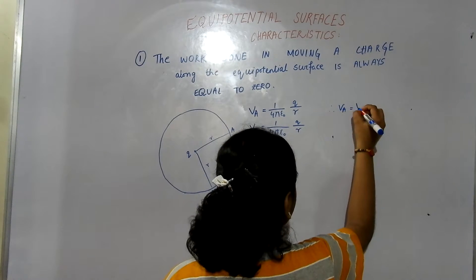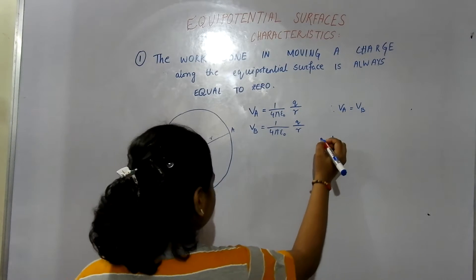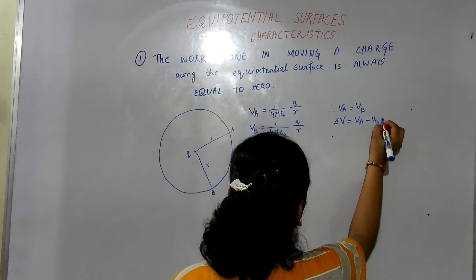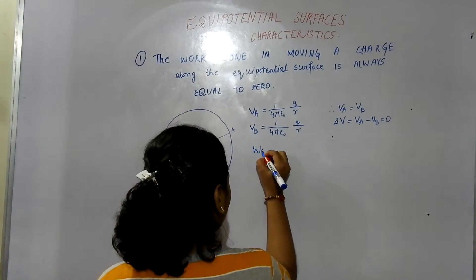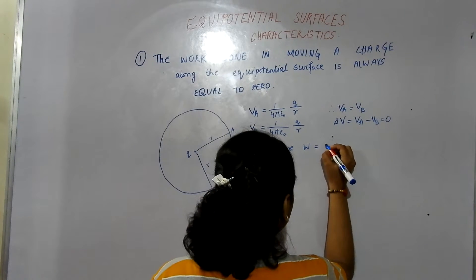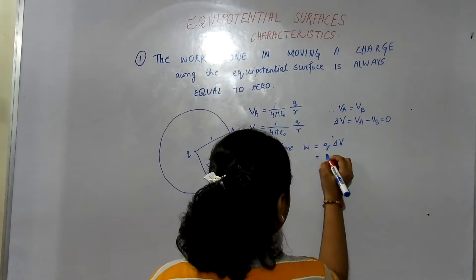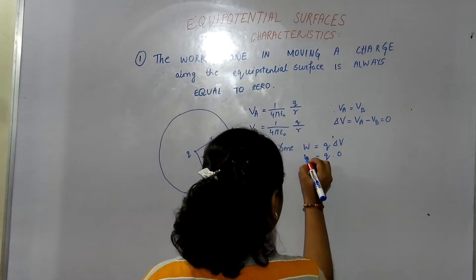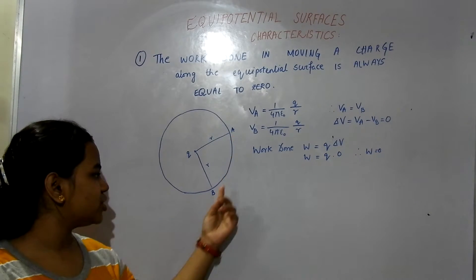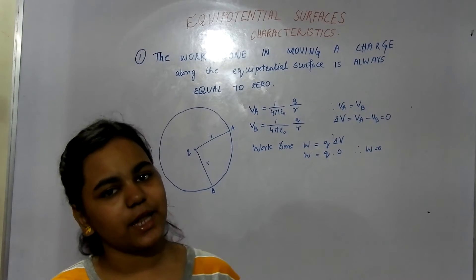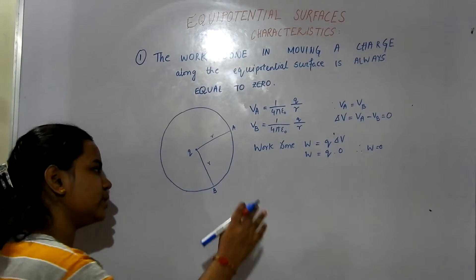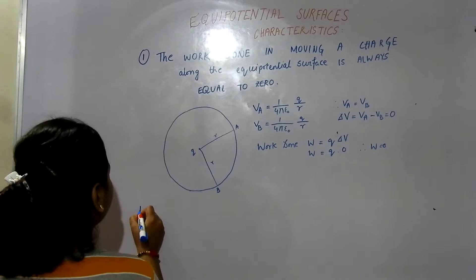Therefore, V_A is equal to V_B on an equipotential surface. Therefore, delta V, that is V_A minus V_B, is equal to zero. Now we have the formula: work done W is equal to Q into delta V. So if delta V is zero, therefore work done is zero. So we can move a charge from position A to position B, or from any position to any position on an equipotential surface, without any work done, without any force applied. This is our first characteristic.